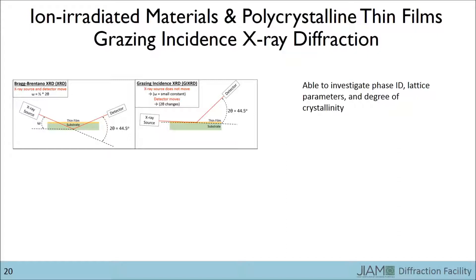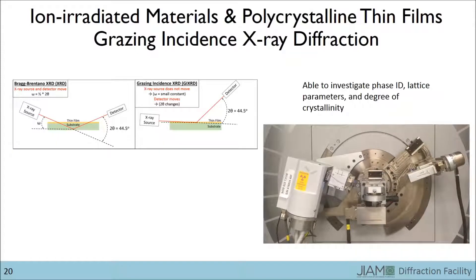In a moment I'll show you a real example of data collection from 40 to 50 degrees 2 theta using both Bragg-Brentano and grazing incidence configurations. But first I'd like to point out some of the different parts of the diffractometer. On the left is the X-ray source and on the right is the detector. In the center is the sample.